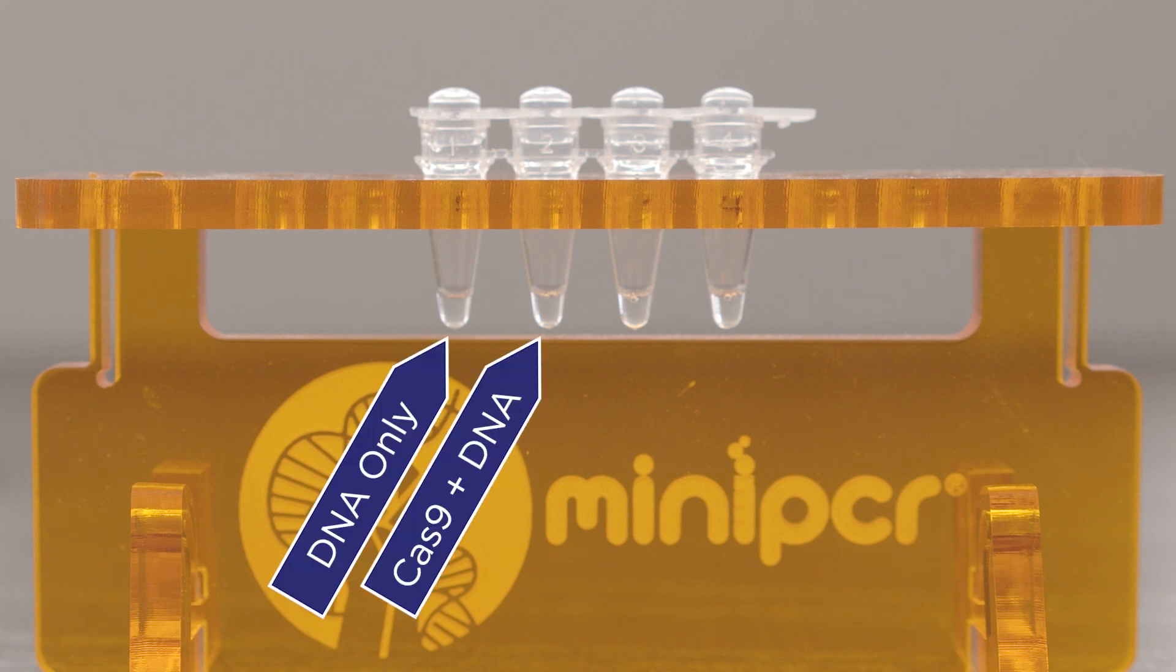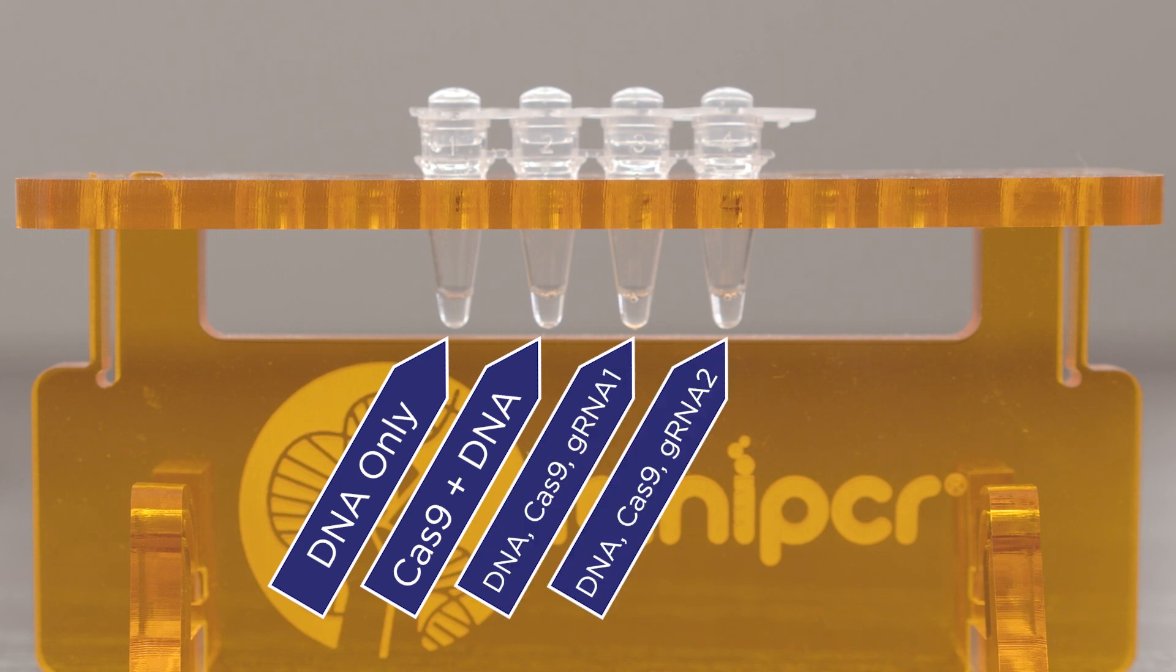and tubes with DNA, Cas9, and one of two guide RNAs that target different positions in the DNA that you analyzed in the pre-lab activity.